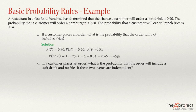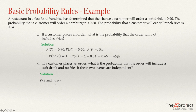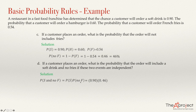If a customer places an order, what is the probability that the order will include a soft drink and no fries, if the two events are independent? We need to multiply their probabilities. P(S and no F) equals P(S) times P(no F), which is 0.90 times 0.46, giving an answer of 0.414 or 41.4%.